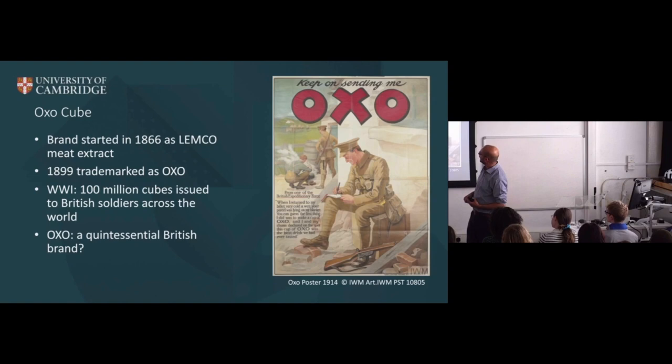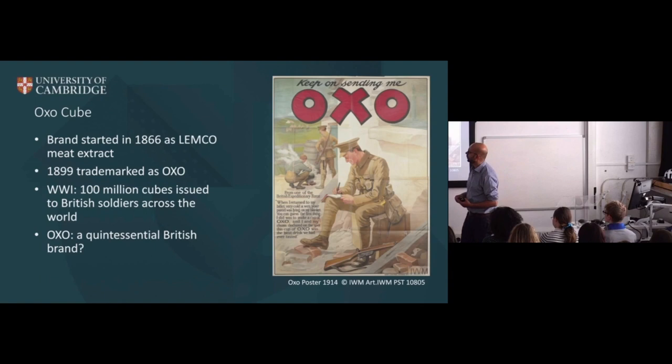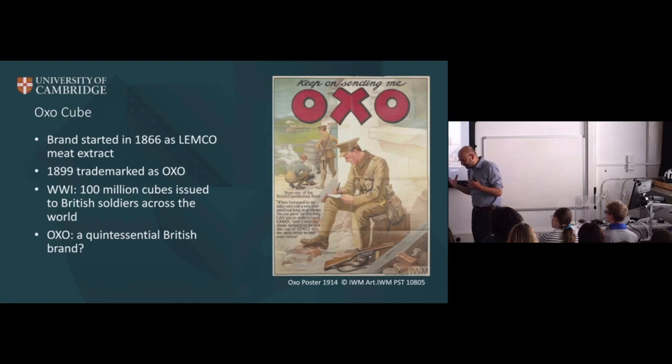It is marketed, and always has been, as quite essentially British. You can see a poster put out by OXO during the First World War where a soldier is writing home, talking about the restorative and homely properties of this drink — a somewhat rose-tinted view of the trenches. We know the OXO Cube started in the second half of the 19th century, manufactured as Lemco, and by 1899 it was trademarked as OXO and sold to the forces during World War One and used across the world. Is it then a quintessential British brand?